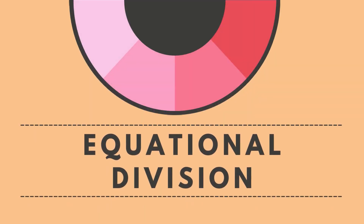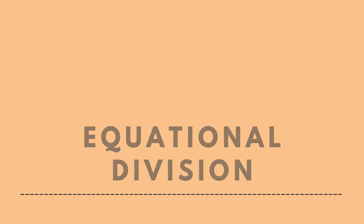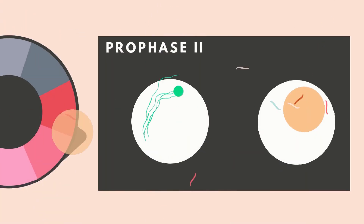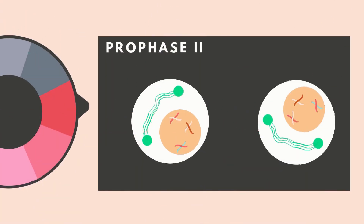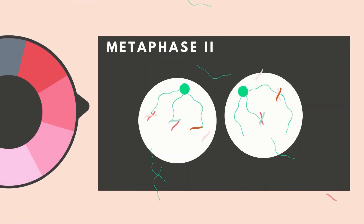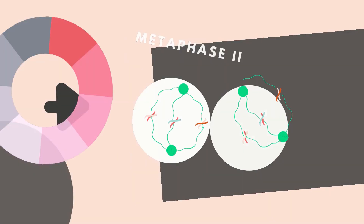The second division, also known as equational division, separates sister chromatids. During Prophase II, chromosomes condense and centrosomes move to opposite poles. Then in Metaphase II, spindle fibers from opposing centrosomes attach to chromosomes and align them along the cell equator.